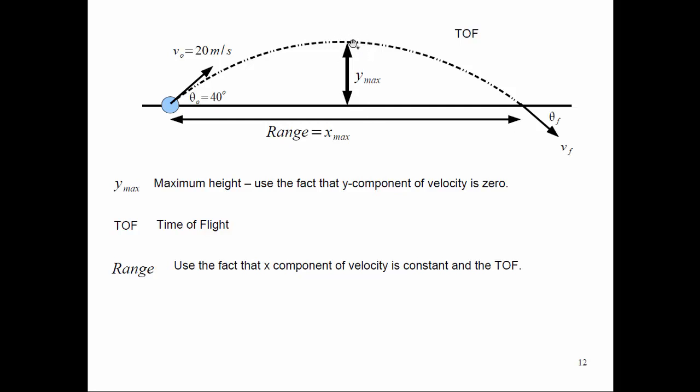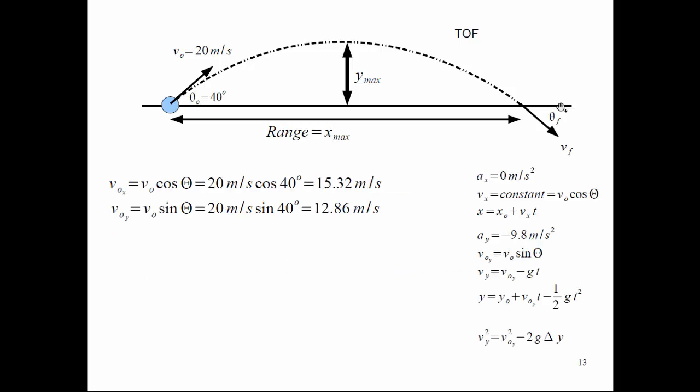We can find the maximum height because the Y velocity at the very top is equal to zero. The X velocity is constant, but the Y velocity at the top is zero. We also like to find the time of flight — how long it's been in the air — and the final velocity and final angle. When you have these problems, the first thing to do is find the X and Y components.